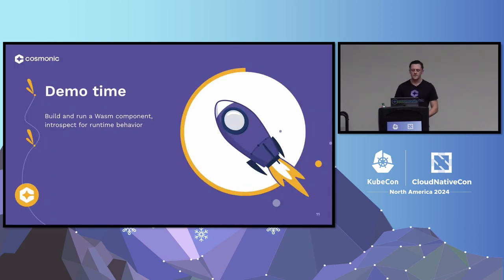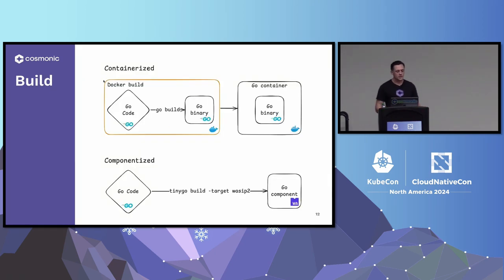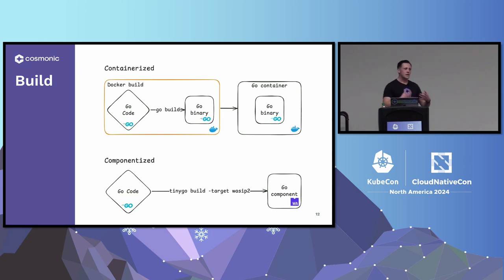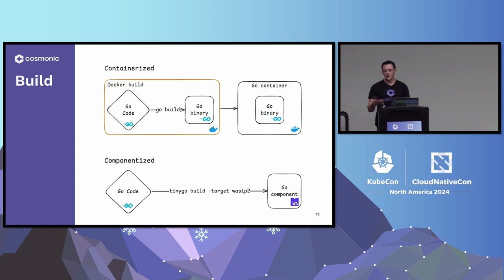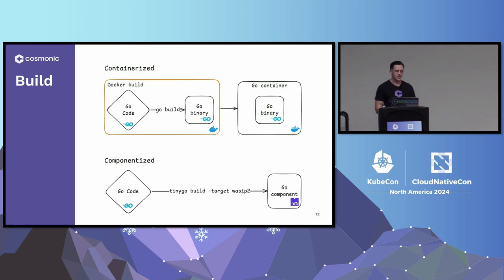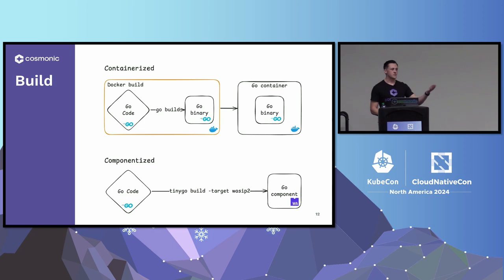The difference between containerizing and componentizing an application is really just the output unit of compute. You start with Go code — if containerizing, you run a Docker build that runs a Go build and ships a Go binary inside a container. Componentizing is similar: you use the same compiler toolchain, but in this case TinyGo, and compile your Go code to a WebAssembly component by just changing the target to WASI P2.